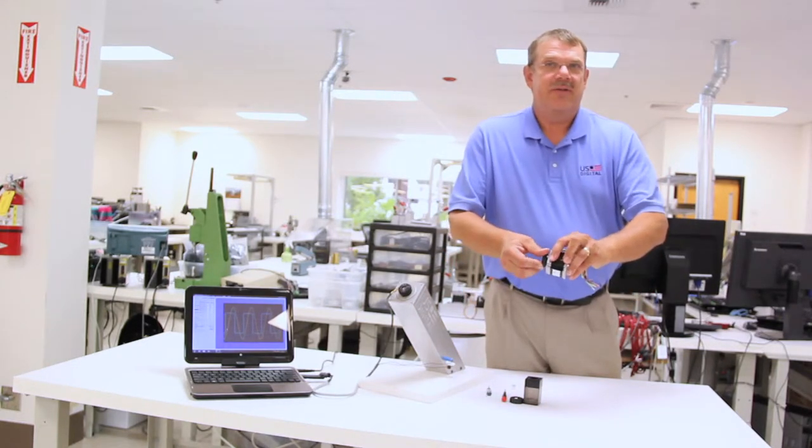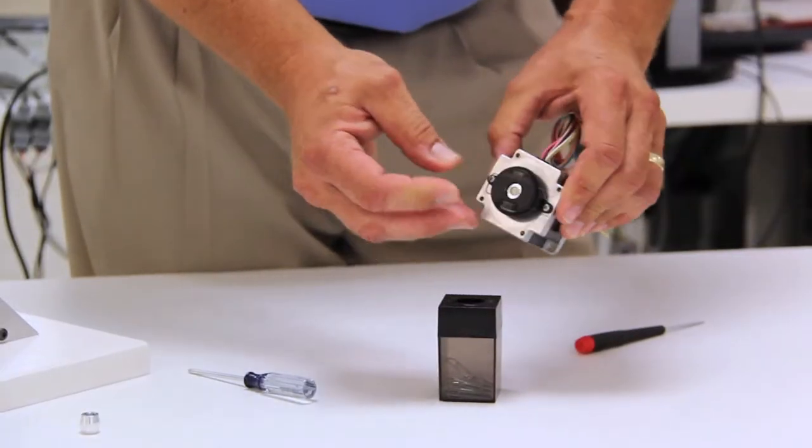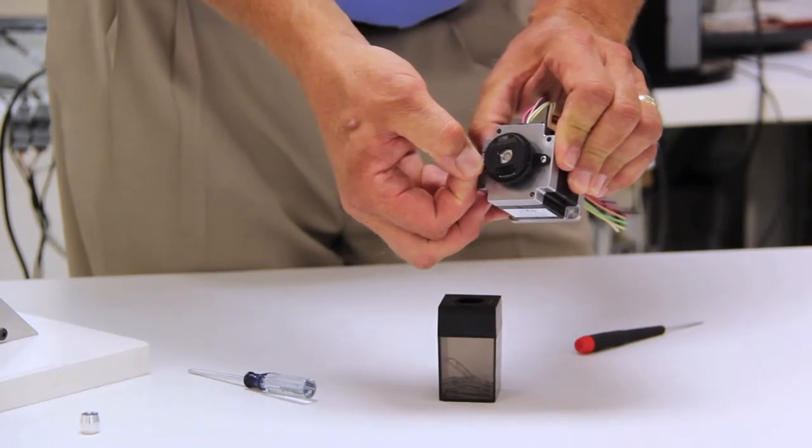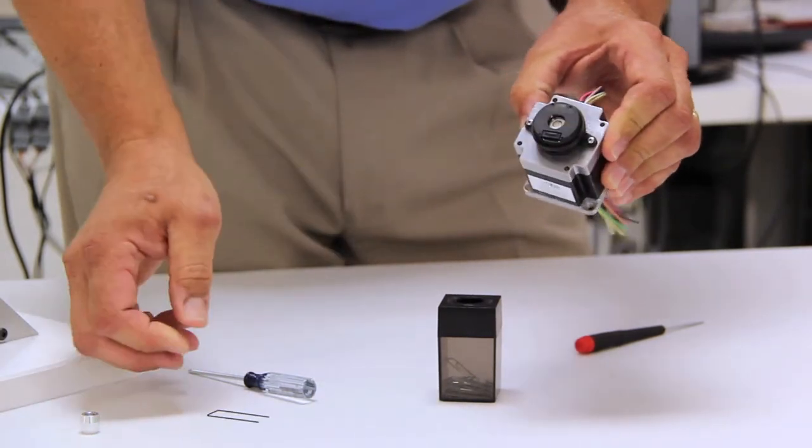Full 360 degrees. There's no stops, no limits. You can remove the gapping tool that sets the optic's air gap to our sensor. The product is now ready to run.